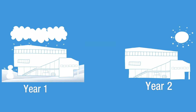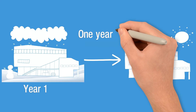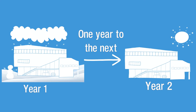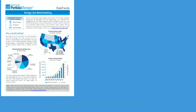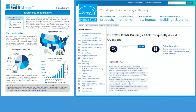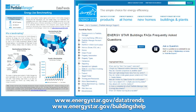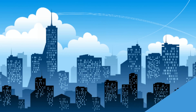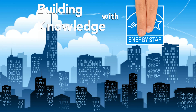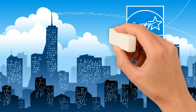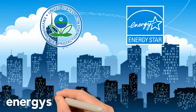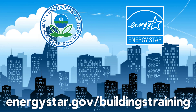Weather-Normalized EUI is the best way to evaluate a single property from one year to the next, or to evaluate building performance if you cannot earn a 1-to-100 ENERGY STAR score. For more information about commercial building EUI, check out the ENERGY STAR Data Trend series or our list of frequently asked questions. Continue building knowledge with ENERGY STAR by checking out our complete video series available at energystar.gov/buildingstraining.